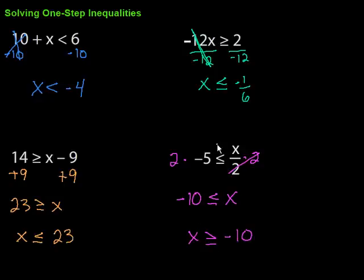So solving one-step inequalities, process very similar to solving equations. The big differences are when we multiply or divide by a negative on both sides, we have to flip that inequality symbol like we saw here.